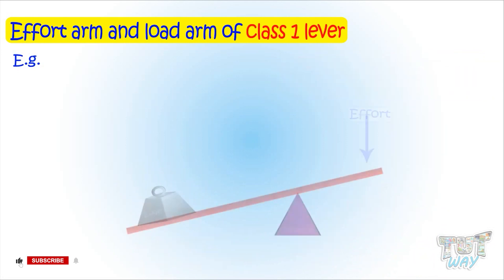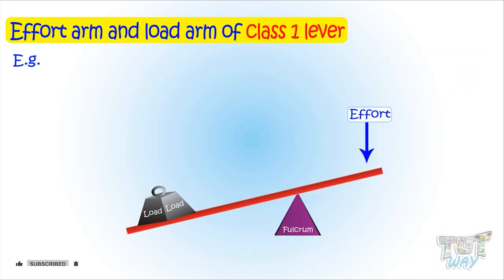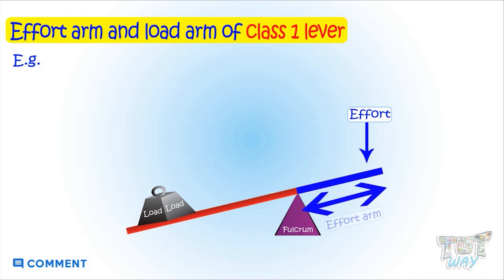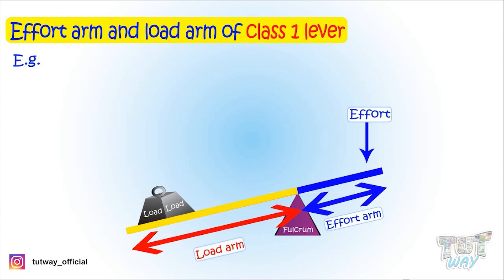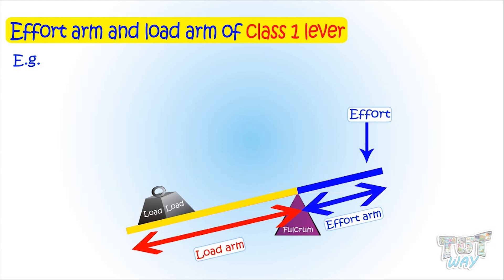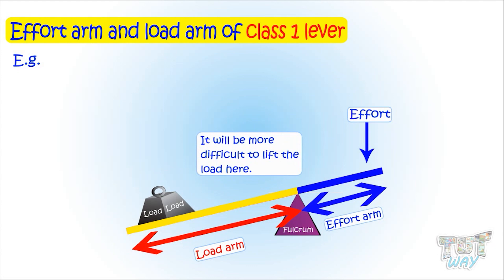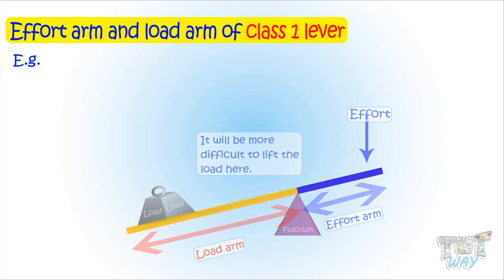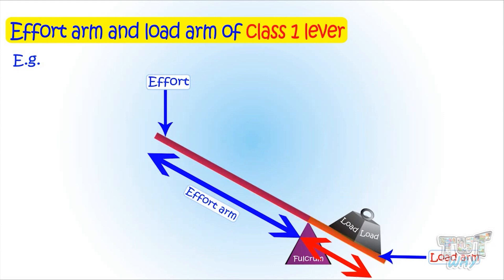Here is one more example — another class 1 lever. The effort arm is the distance between the fulcrum and the effort, so this much is its effort arm. The load arm is the distance between the load and the fulcrum, so this much is its load arm. You can clearly see that the load arm is bigger than the effort arm, so according to the rule, it will not give any mechanical advantage. Rather, it will be more difficult to lift the load here. So what we learned is: the effort arm should be longer for getting the work done easily.